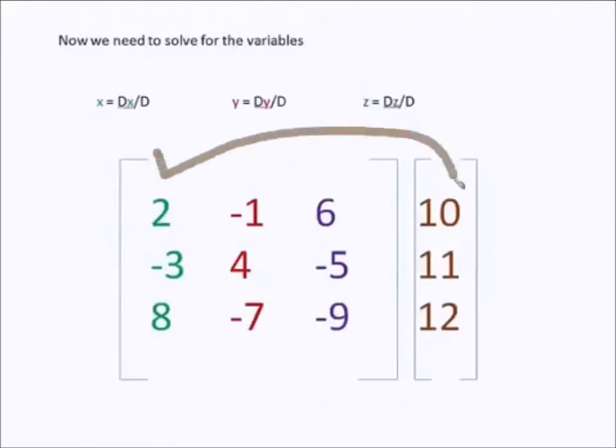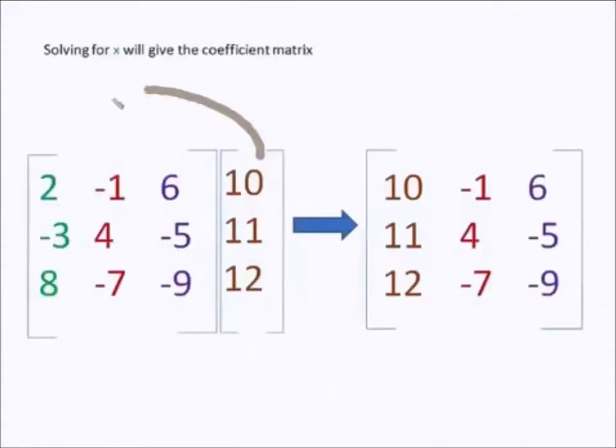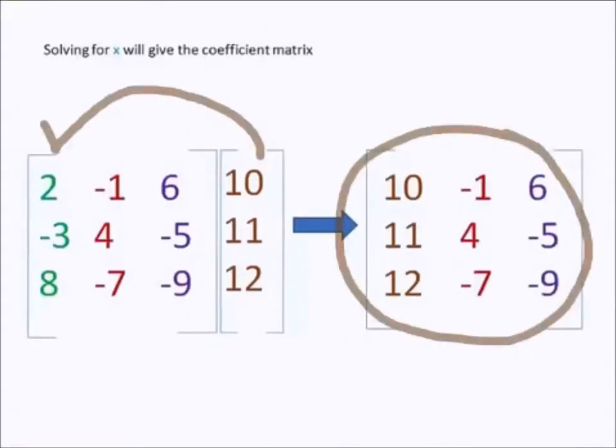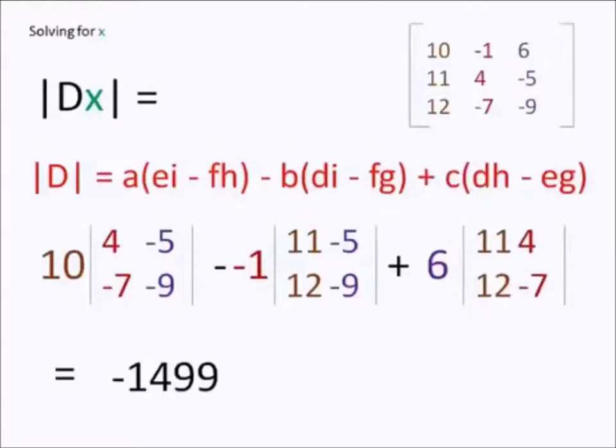So, how do we use Cramer's rule? Well, we take the solutions column and replace it with the column of the variable we wish to find. Then we calculate the determinant. As you can see for x, the x column was replaced with the solutions column, and we got this coefficient matrix. Then we calculate the determinant like before.